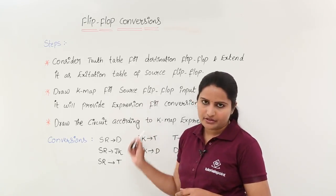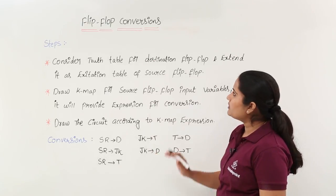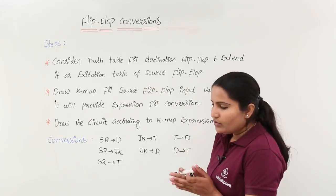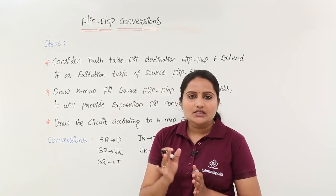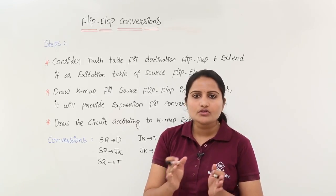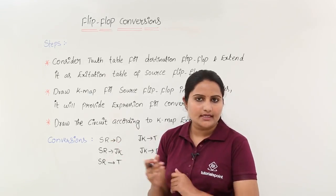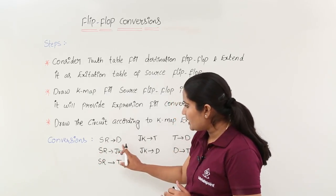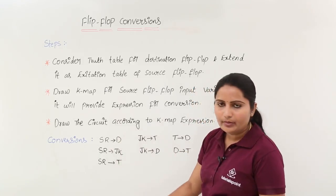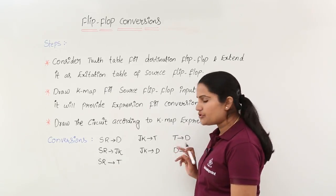We already discussed truth tables and excitation tables in earlier classes, so that knowledge you need to have for flip-flop conversions. Consider the truth table for the destination flip-flop and extend it as the excitation table of the source flip-flop. The last two columns in the truth table — present state (Qn) and next state (Qn+1) — are the starting columns of your excitation table. The basic conversions we are considering are: SR to D, SR to JK, SR to T, JK to T, JK to D, T to D, and D to T.